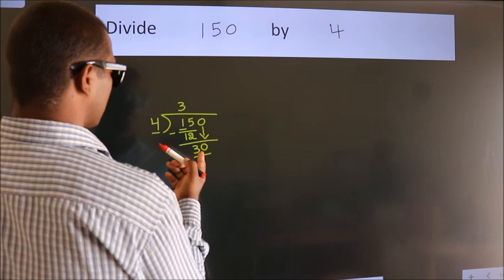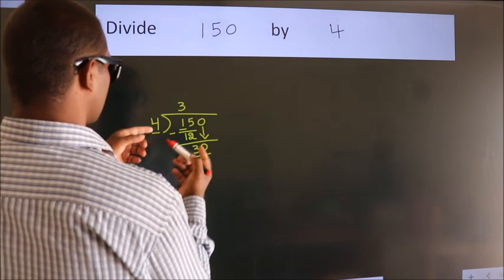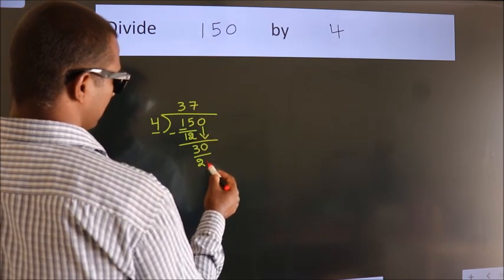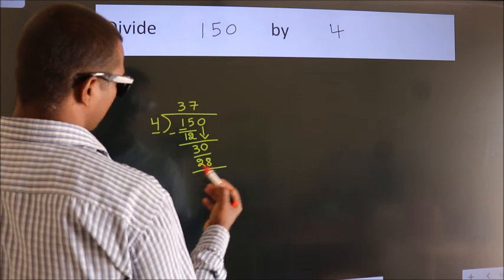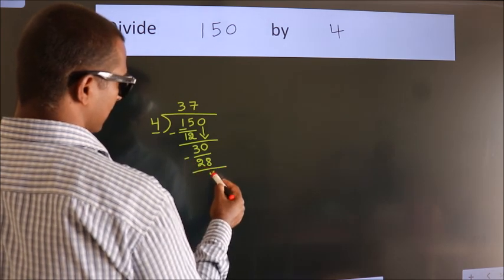A number close to 30 in the 4 table is 4 sevens, 28. Now we subtract. We get 2.